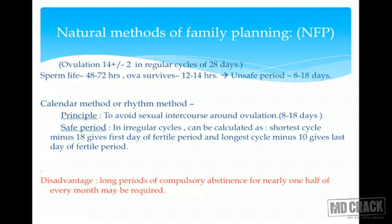Natural methods of family planning require awareness about the menstrual cycle and fertility period. In a regular 28-day cycle, ovulation occurs around day 14. The fertile period is 7 days before and 7 days after, because the ovum lives for 24 hours and sperm can live for 48–72 hours — so approximately 3 days before and 3 days after ovulation, or 7 days either side to be safe.